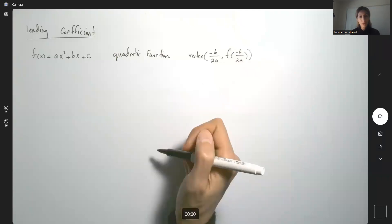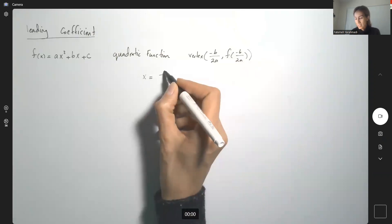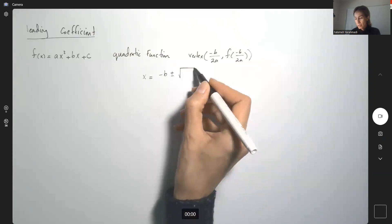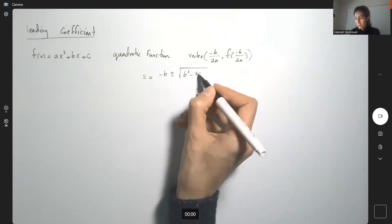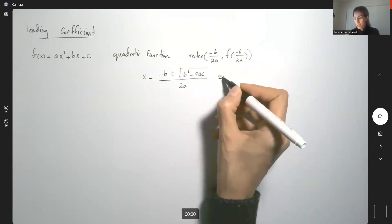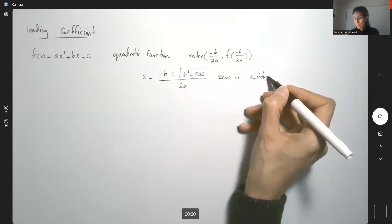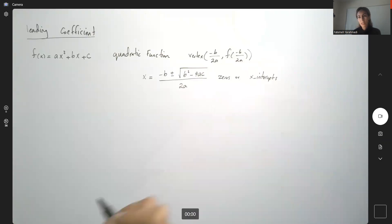You can also find the zeros of this function by using the quadratic formula. x equals negative b plus or minus square root of b squared minus 4ac divided by 2a. It gives you zeros or x-intercepts.